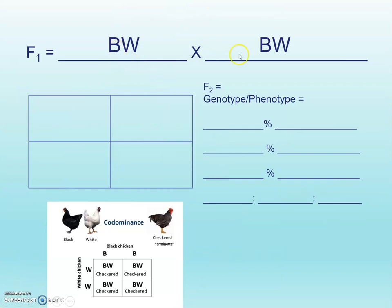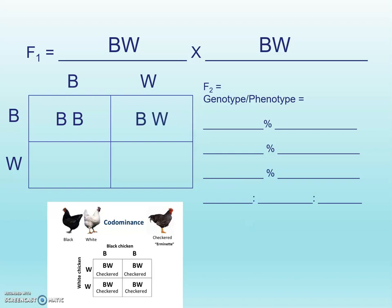Now for our next generation, we're going to take two of these checkered chickens and put them together and see what we get. So there's one checkered chicken and another checkered chicken. Box one is going to be BB. Box two, BW. Box three, BW — don't be switching to WBs halfway through; keep it consistent however you start it. And box four, WW.